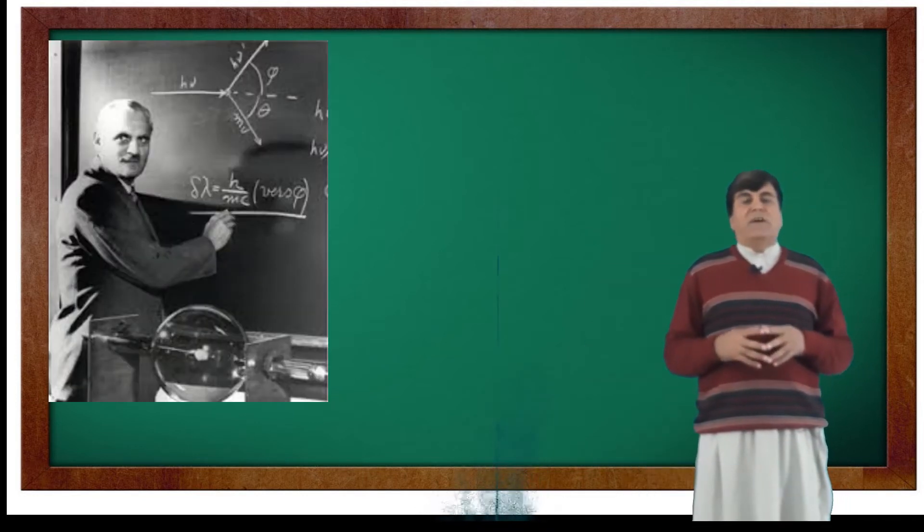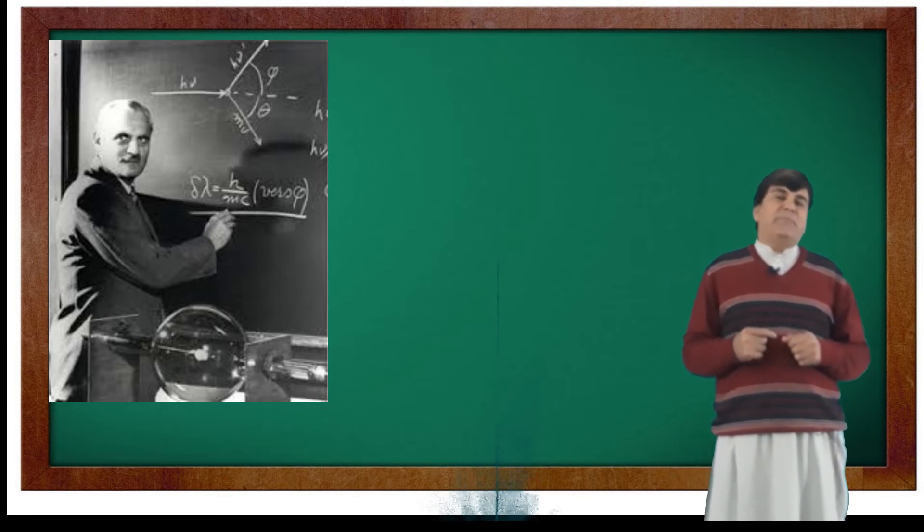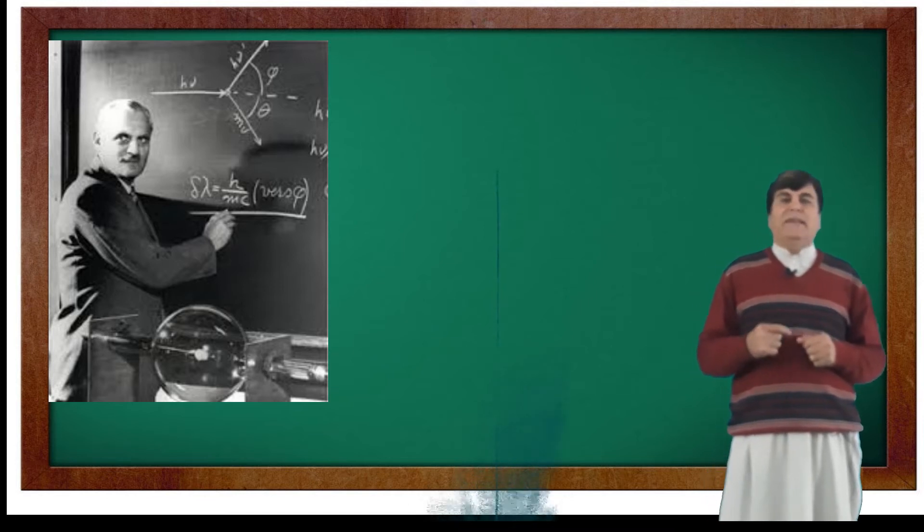Arthur H Compton was an American scientist who conducted a series of experiments on the scattering of x-rays through light elements.